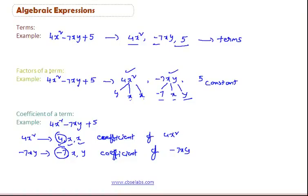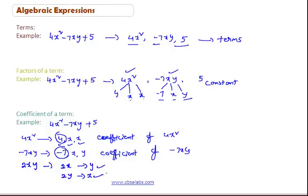Consider the term 2xy. The coefficient of x can be written as 2y, and the coefficient of y can be written as 2x. We can conclude that the coefficient of a term is either a variable or a constant.